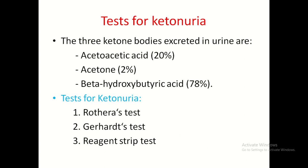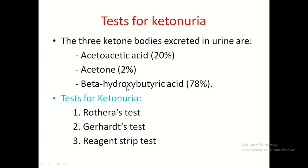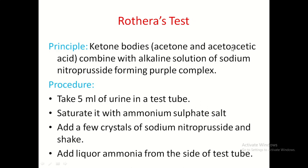Test for ketone bodies — presence of ketone bodies in urine is called ketonuria. Three types of ketone bodies may be present: acetoacetic acid, acetone, and beta-hydroxybutyric acid. Tests for ketonuria: Rothera test, Gerhardt test, and reagent strip test. Rothera test detects both acetone and acetoacetic acid, while Gerhardt test detects only acetoacetic acid.